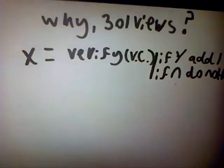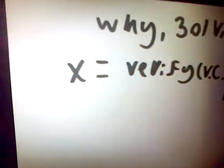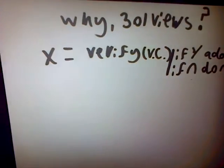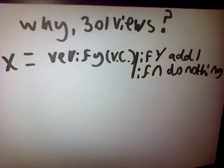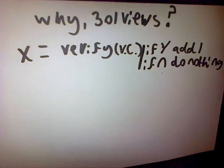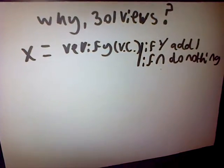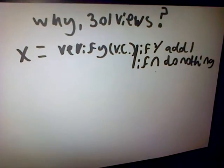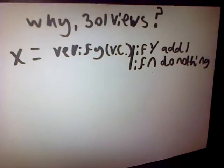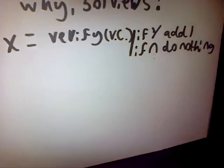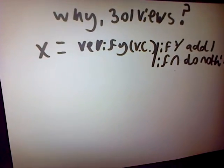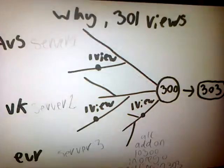So what was x anyway? Basically, x is verified view count. If proven to be legit — so if yes, it's legit, add 1. If no, do nothing. That is basically x. That was just quite a brief thing.